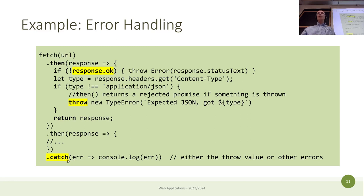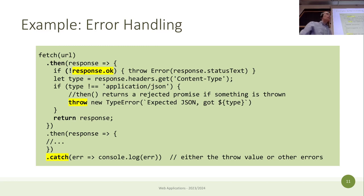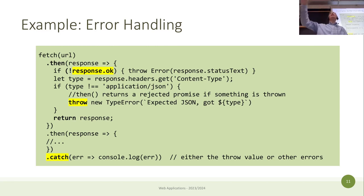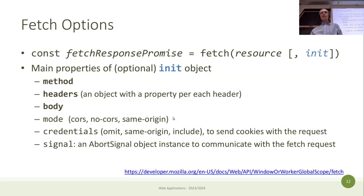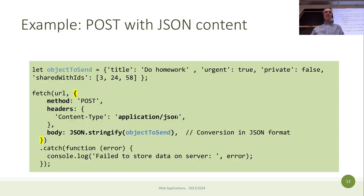In case of a network error, that's handled by `.catch()`. Typically when there's a network error there's nothing you can really do — you just show a message like 'try again later' in the application.